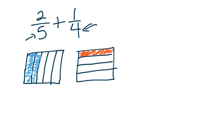So then the next step is to create like units. So I'm going to partition my first box into fourths horizontally.